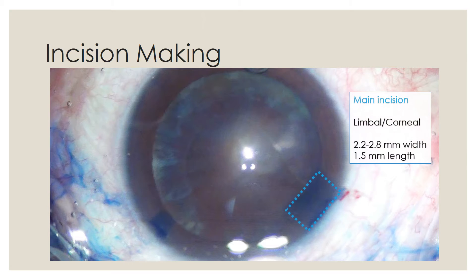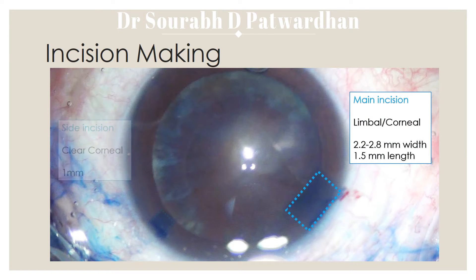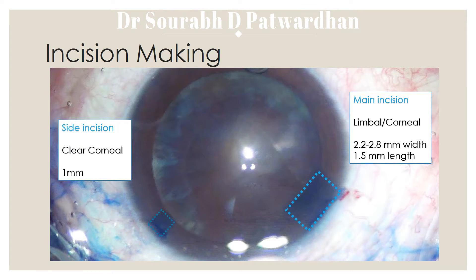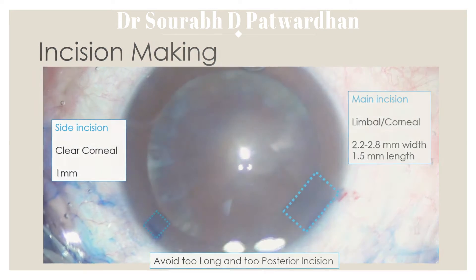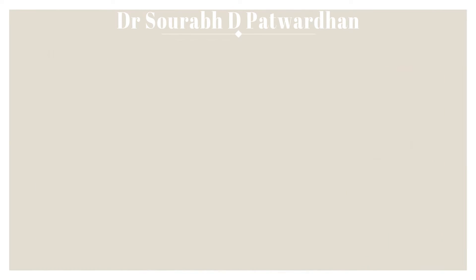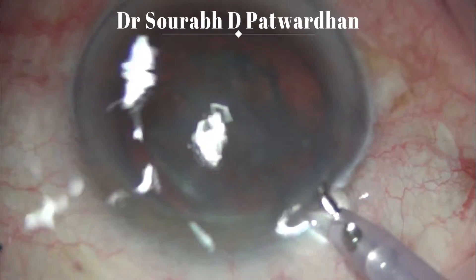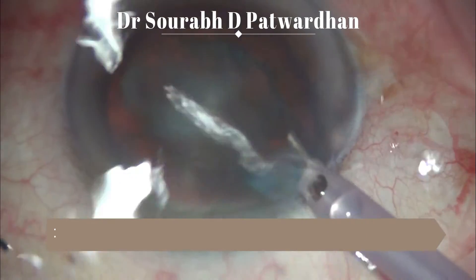While making the incision, my preferred incision is limbal or corneal, 2.2 to 2.8 mm width with 1.5 mm length. The side incision should be small and clear corneal. It is better to avoid too long and too posterior an incision because it makes maneuvers difficult in a deep anterior chamber.